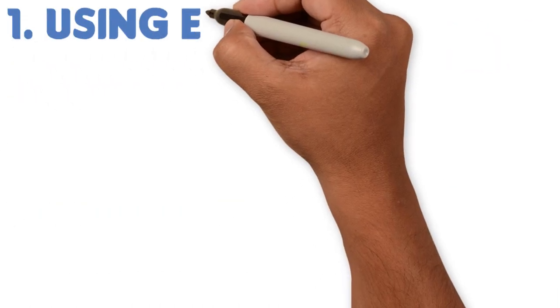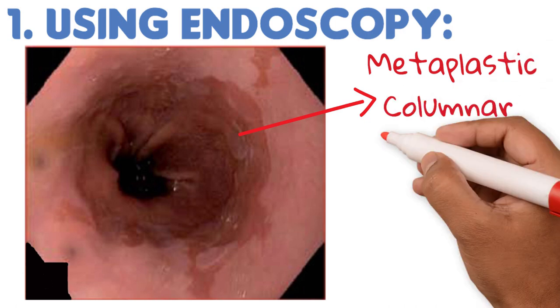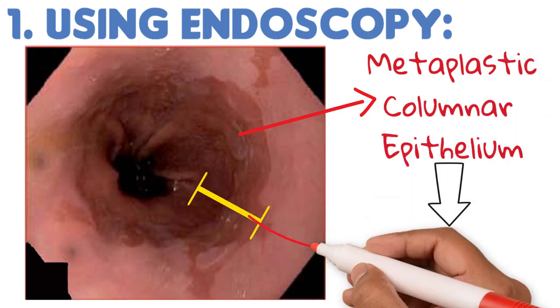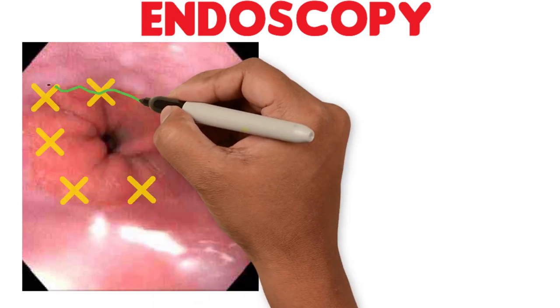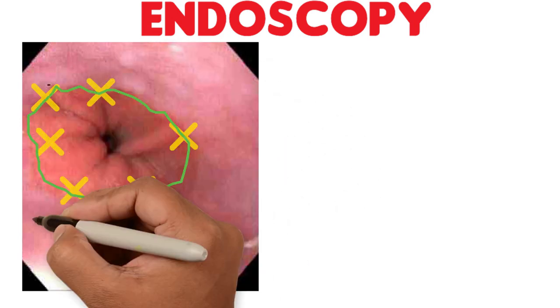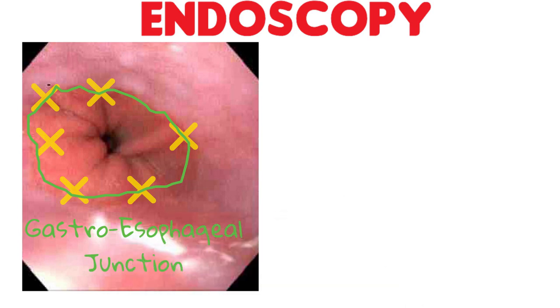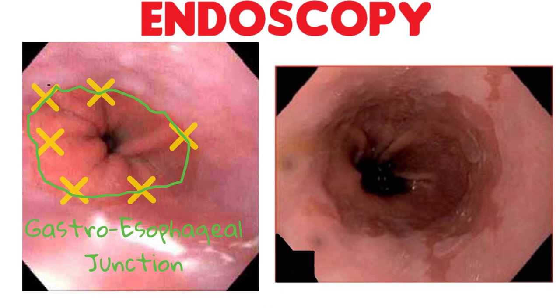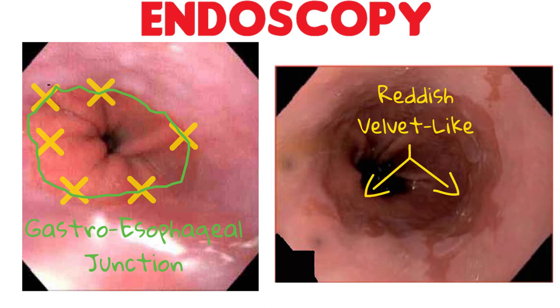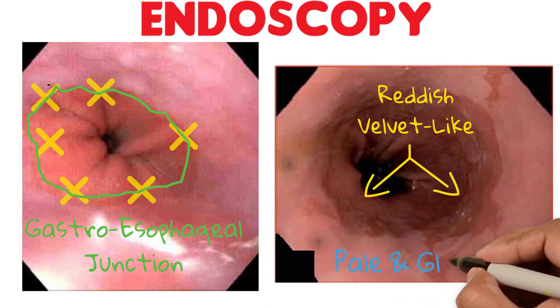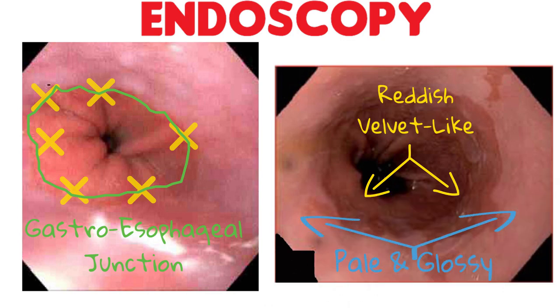Number one: by using endoscopy, one must see the metaplastic columnar epithelium lining the distal esophagus at least one centimeter or more above the gastroesophageal junction. To identify the gastroesophageal junction via endoscopy, you should look out for the proximal limit of the gastric folds — the gastroesophageal junction is where the gastric folds begin to appear. The columnar epithelium of Barrett's esophagus has a reddish color and velvet-like texture on endoscopic examination, whereas squamous epithelium has a pale, glossy appearance, as we can see in this endoscopy.